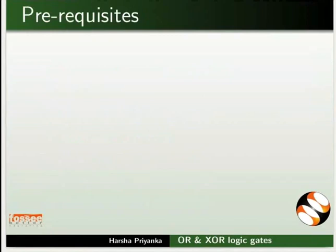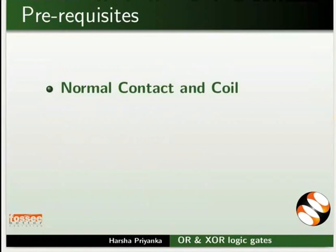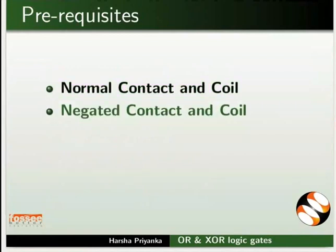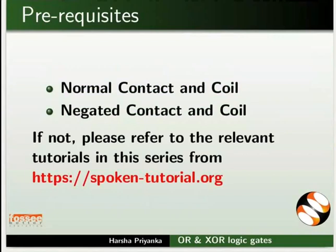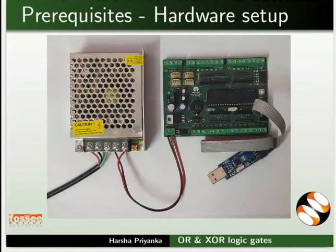To follow this tutorial, you should know the working of Normal Contact and Coil, and Negated Contact and Coil. If not, please refer to the relevant tutorials in this series on this website. Connect SMPS and USB ASP to the mainboard as shown in the picture, and keep these connections throughout this tutorial.